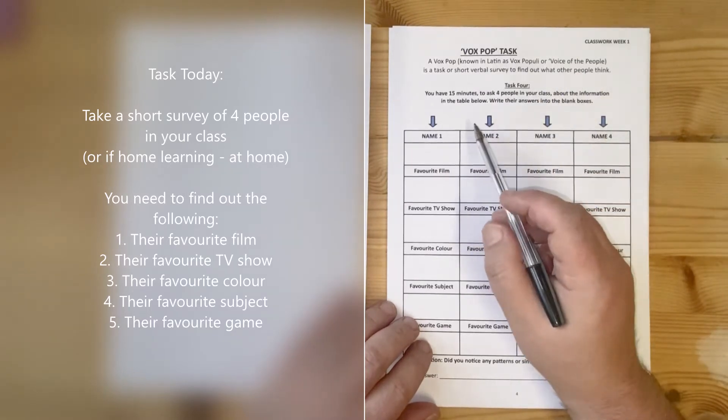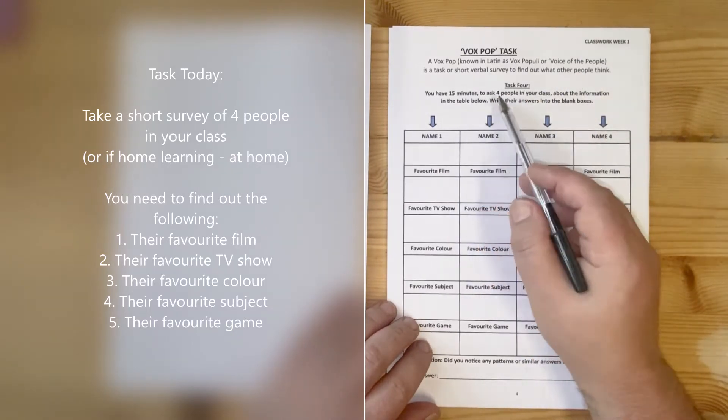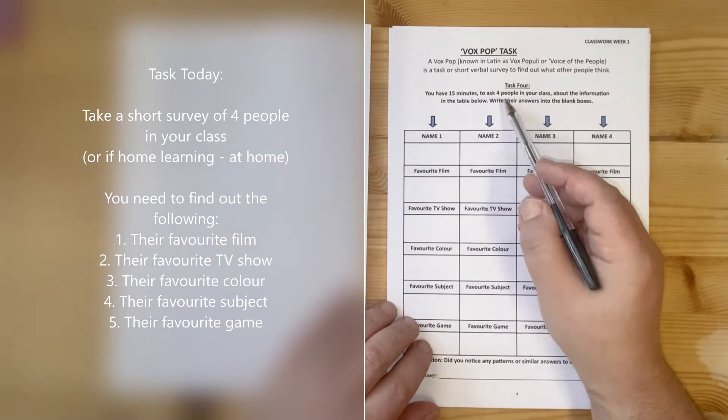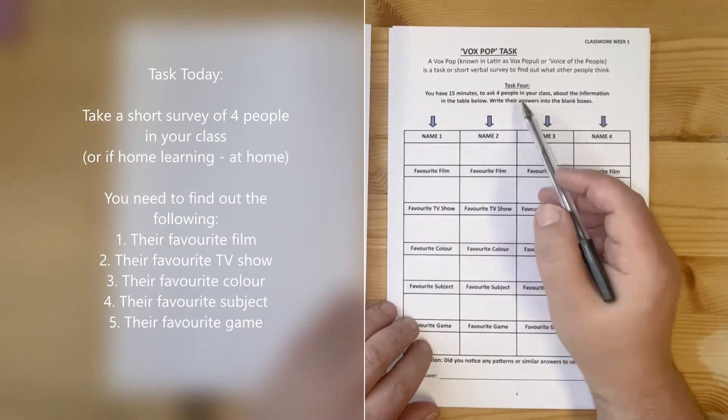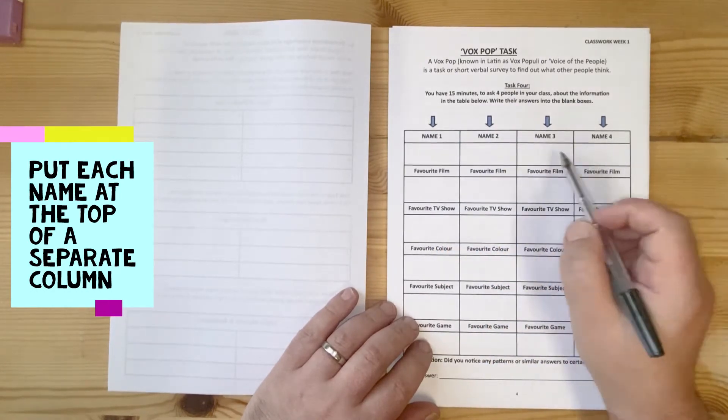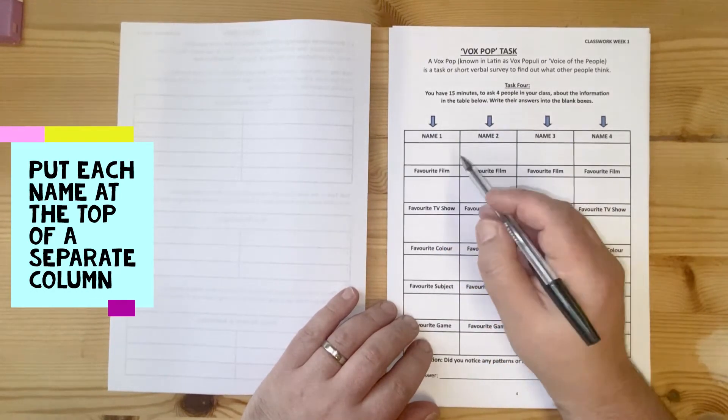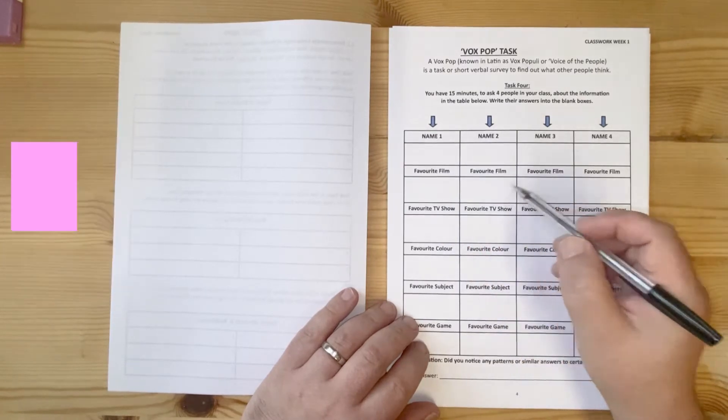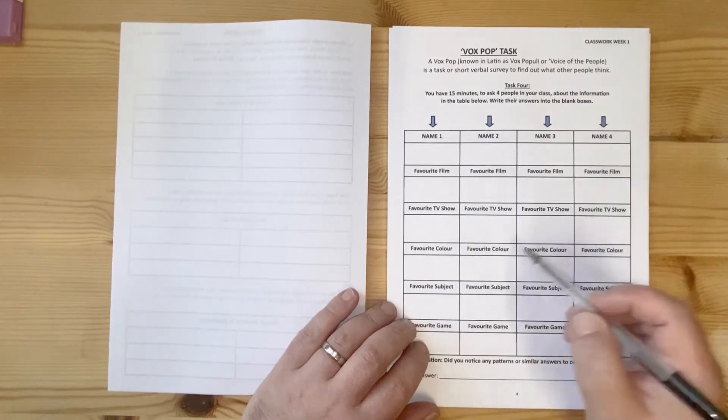Basically, you'll have about 15 minutes, maybe, to ask four people in your class with the information table below. You might put in their names here, so put any names that you want, maybe people around you. Then you put in what their favorite film is, favorite TV show, favorite color, favorite subject, and favorite game.